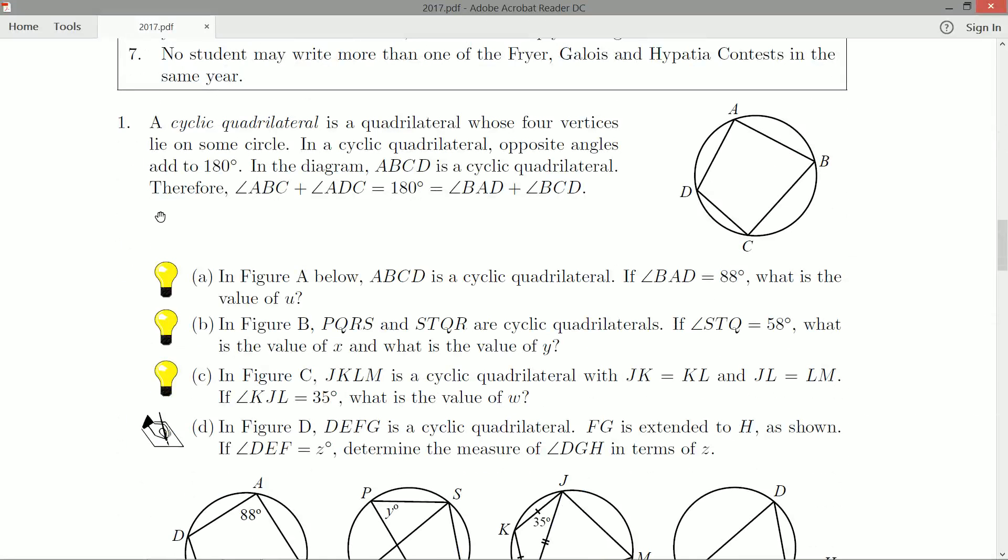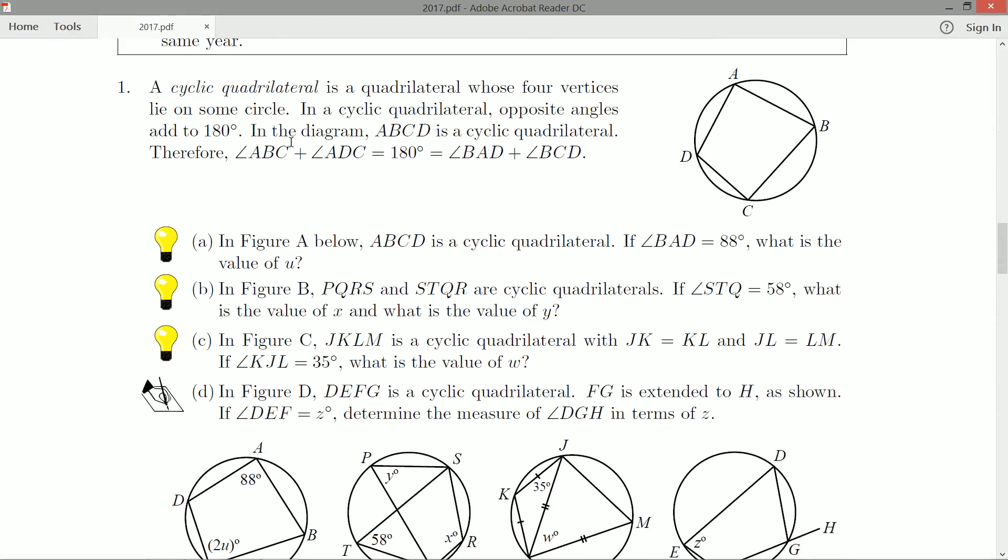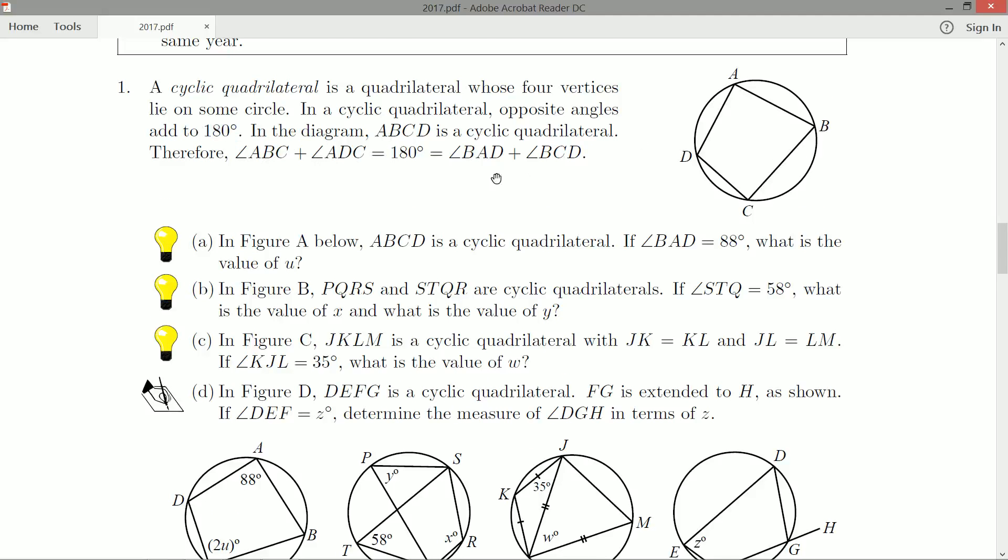A cyclic quadrilateral is a quadrilateral whose four vertices lie on some circle. In a cyclic quadrilateral, opposite angles add up to 180 degrees. This is common knowledge if you know what a cyclic quadrilateral is. In the diagram, ABCD is a cyclic quadrilateral, therefore angle ABC and angle ADC equal 180, and angle BAD and angle BCD also add up to 180 degrees.